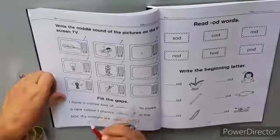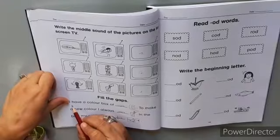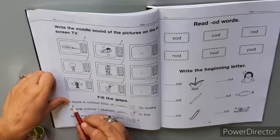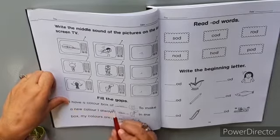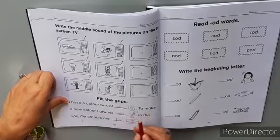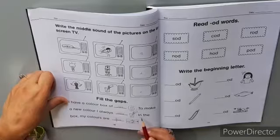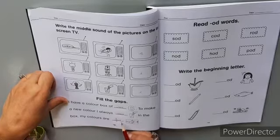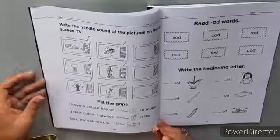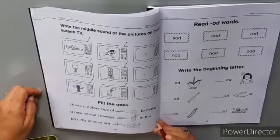Read it again. I have a color box of six. To make a new color, I always mix. In the box, my colors are fixed. Stay home, stay safe. Allah Hafiz.